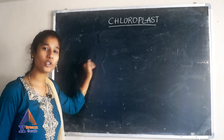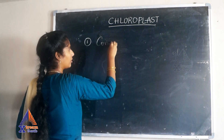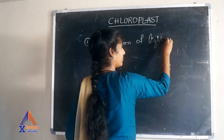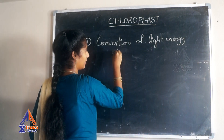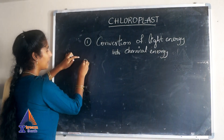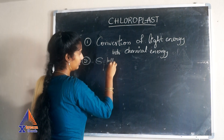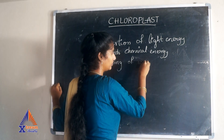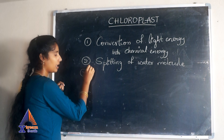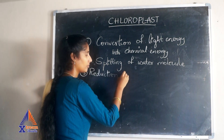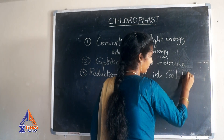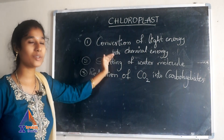In chloroplast, different steps of reactions take place. The first one is conversion of light energy into chemical energy. The second one is splitting of water molecules. The third one is reduction of carbon dioxide into carbohydrates. These three steps undergo during photosynthesis.